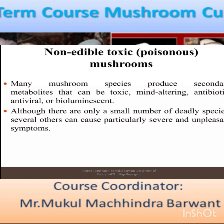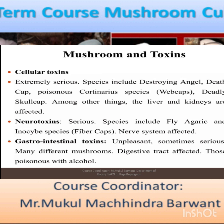Now we are going to learn about non-edible species. Many mushroom species produce secondary metabolites that can be toxic, mind-altering, antibiotic, antiviral, or bioluminescent. There are only a small number of deadly species, but several others can cause particularly severe and unpleasant symptoms. Mushrooms that produce toxins harmful for human consumption are considered non-edible mushrooms.